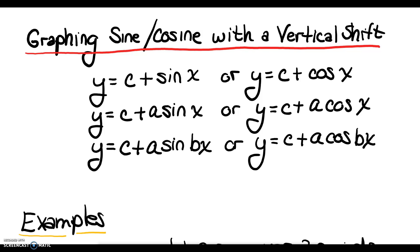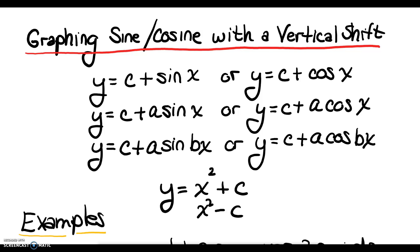This is the second part of graphing sine and cosine with horizontal and vertical shifts. In this video, we're going to talk about the vertical shift. Just like any other function, if you can remember back in Chapter 3 when we were talking about vertical shifts and we had a quadratic function, to move it up or down we added or subtracted a value from our parent function.